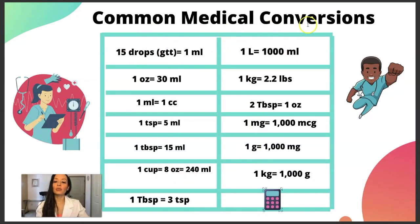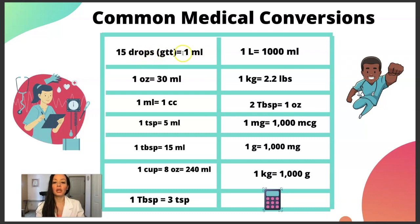Common medical conversions that you will use in your nursing career, or whatever profession you are watching this for. 15 drops — GTT is the abbreviation for one drop, and GTTS for drops multiple. 15 drops equals one milliliter. These are things you simply need to memorize in nursing school.